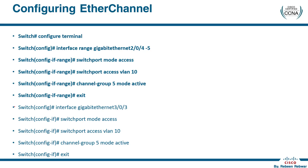If we configure it, you can configure it in a range of interfaces. You can enter the port range and apply the command. The command is called 'channel-group 5'. In every switch, you can configure the channel group using an ID group.